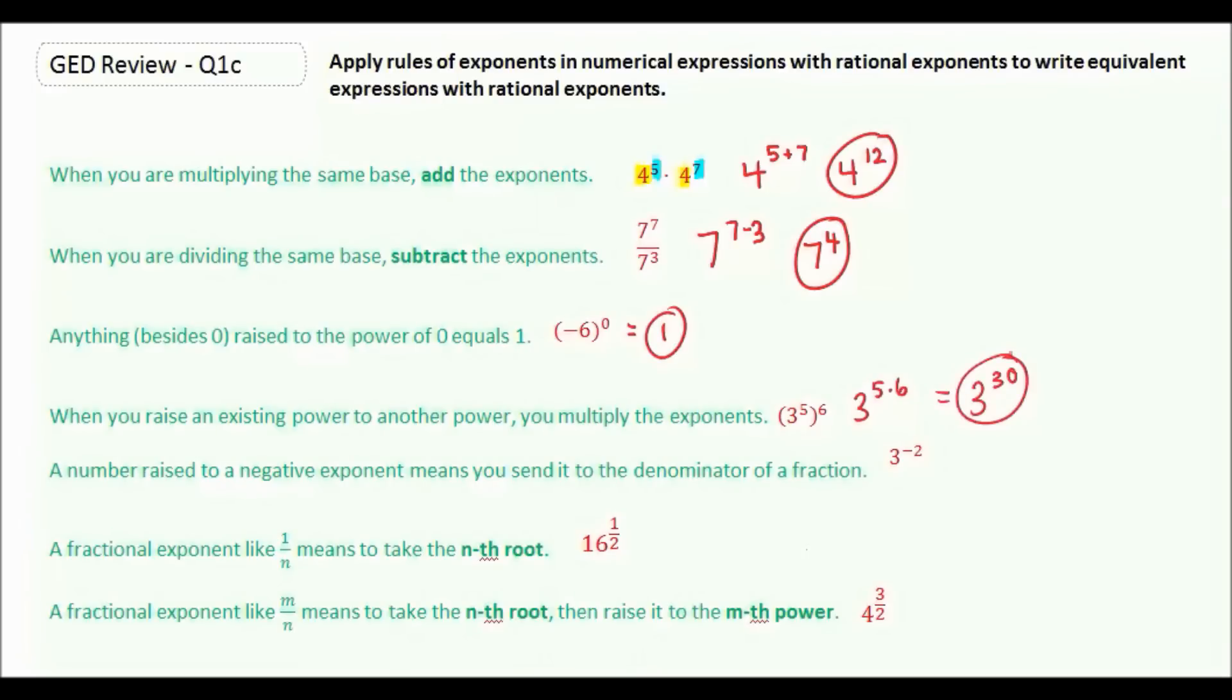Now a number raised to a negative exponent means you send it to the denominator of a fraction. So 3 to the negative 2nd power means we're going to create a fraction, and then it's going to go into the denominator. But when you put it in the denominator, your negative exponent becomes positive. And we can't just leave a blank in the numerator, so we fill it in with a 1. So it would equal 1 over 3 squared, or if we wanted to simplify that a little bit further, we'd say 1 over 9.